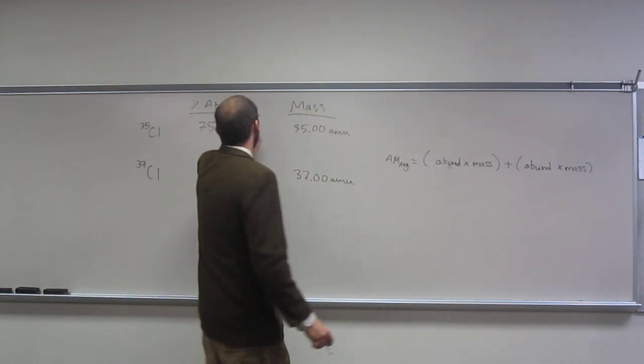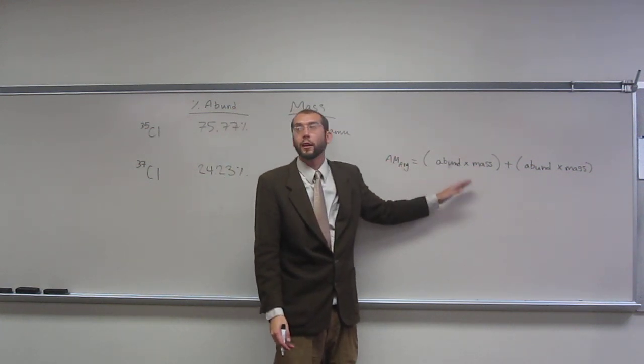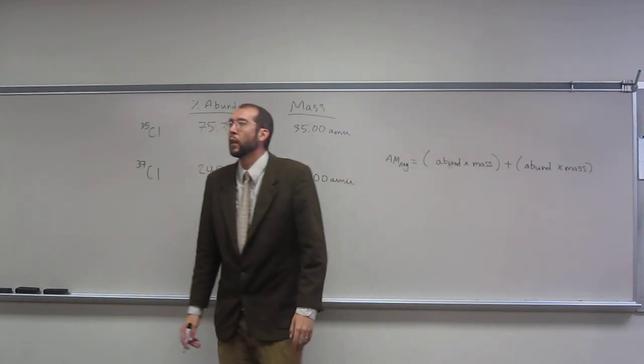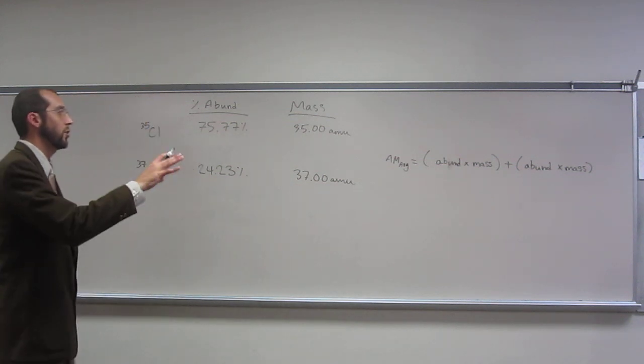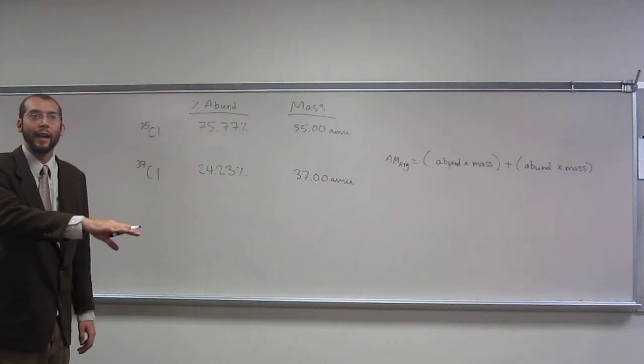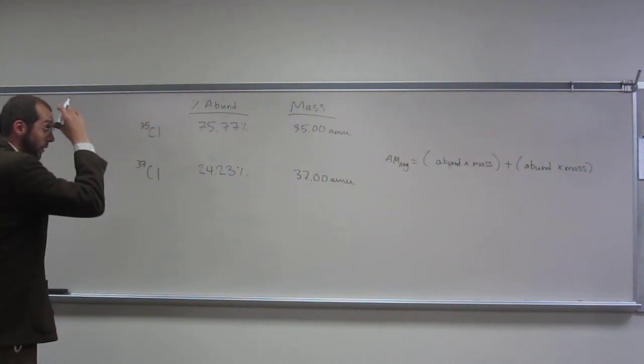So notice, this is percent abundance and this is abundance. So you're going to have to make that a ratio. So you can either make the ratio first or you can make it last. So the way I'm going to do it is last.